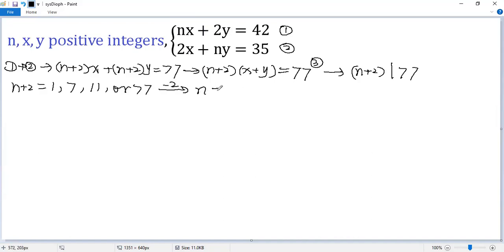Both sides subtract 2. So we get n equals negative 1, 5, 9, or 75.